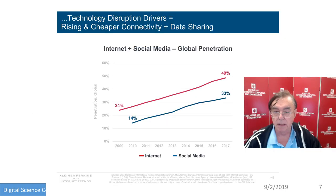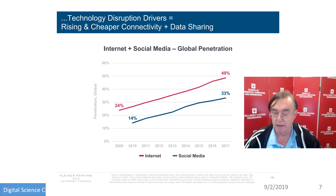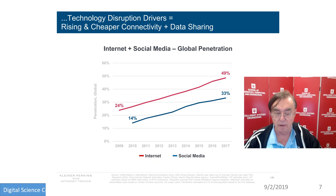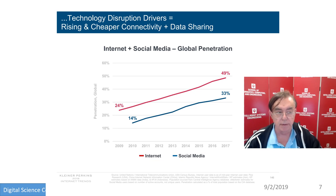This comes from the KPCB Internet Trends presentation, looking at how much the global internet and social media penetration is — it's really quite striking. Nowadays we have 49% internet penetration and 33% social media penetration, which is roughly doubled from 2009 through 2017. This particular slide comes from the 2018 Internet Trends, so it's an up-to-date slide.